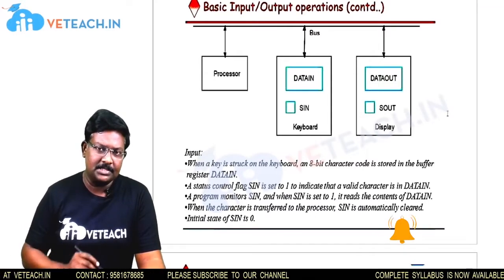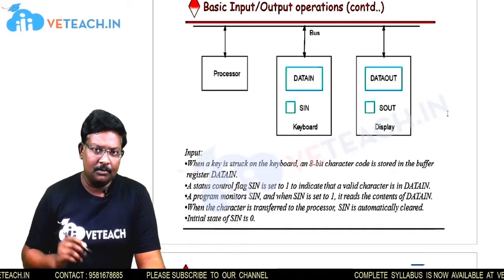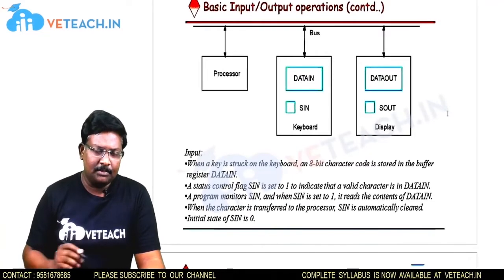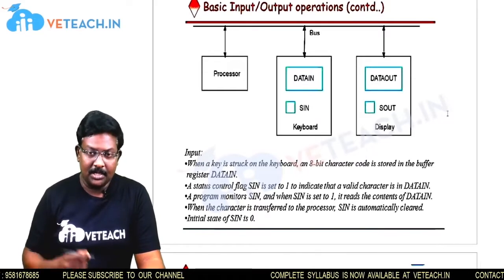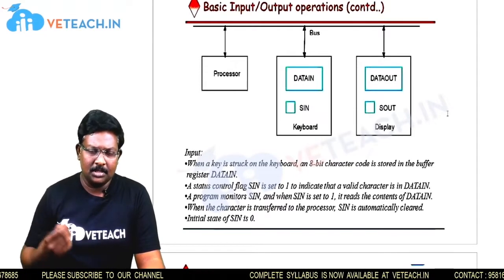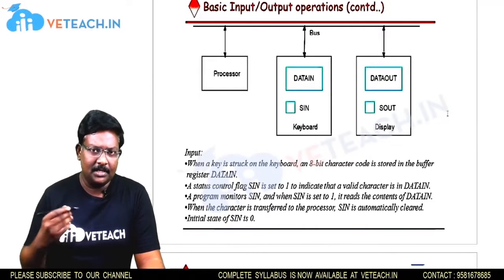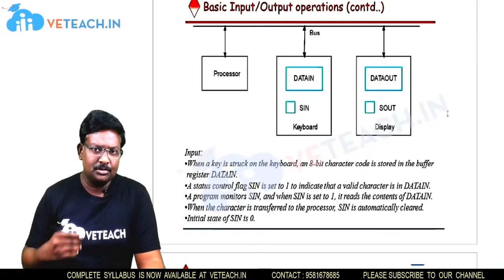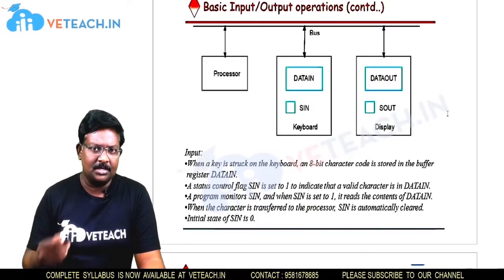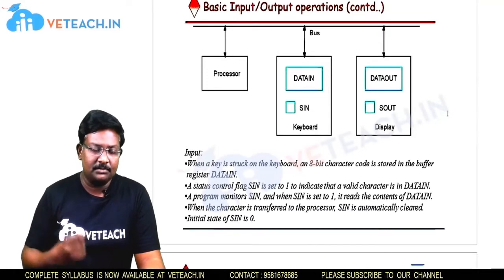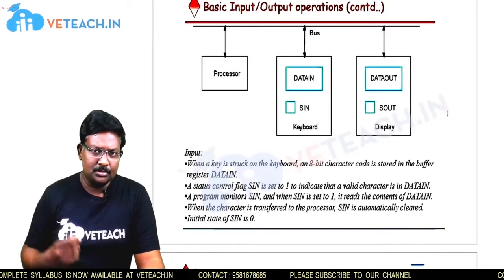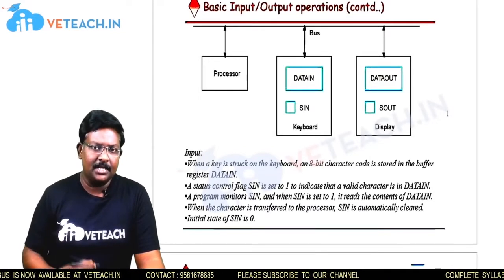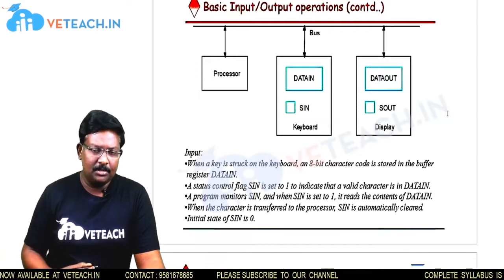In this concept, we are going to discuss what happens if we want to transfer data from an input/output device to the processor. The processor is the fastest device and the input/output devices are the slowest devices. So there should be some synchronization operation between a fast working device and a slow working device. To do that, we follow some procedure for transferring data between the processor and input/output devices.